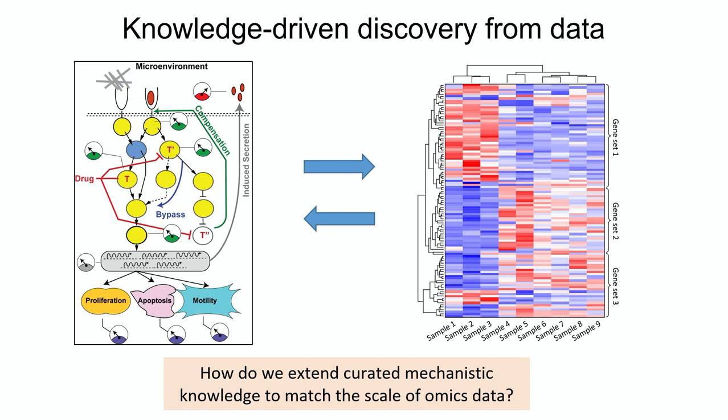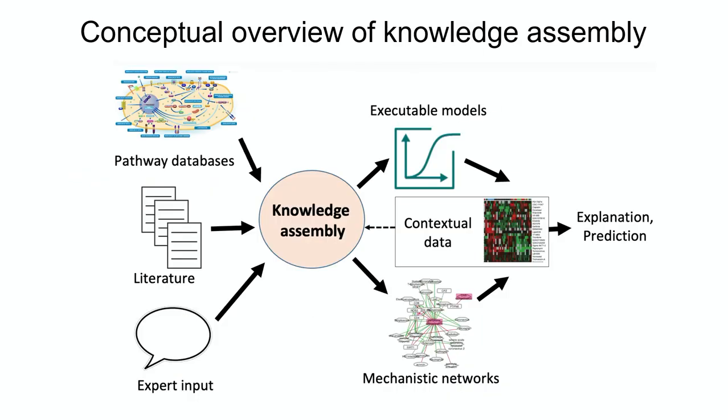Our approach to doing that is what we call knowledge assembly, where on the left-hand side we have various inputs, including curated pathway databases, but also the substantial body of scientific literature that is connected through a layer of knowledge assembly to outputs like executable models and mechanistic networks that ultimately can be used to make explanations and predictions.